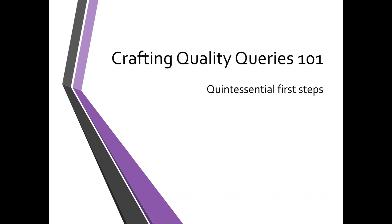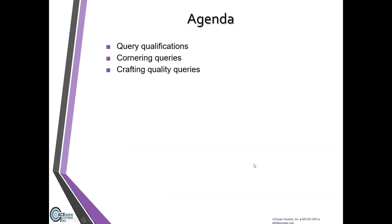All right, good afternoon everyone. We're going to start with the basics of crafting quality queries — and yes, throughout this I have tried to have lots of keywords with Q and K sounds, so that was very intentional and a bit campy. Let's go ahead and get started. What are our first steps with queries? We're going to talk about query qualifications, what is a query, what makes it a query, what's included, then we're going to corner some queries — find where they are, how we know what we need — and then we will start on crafting our quality queries.